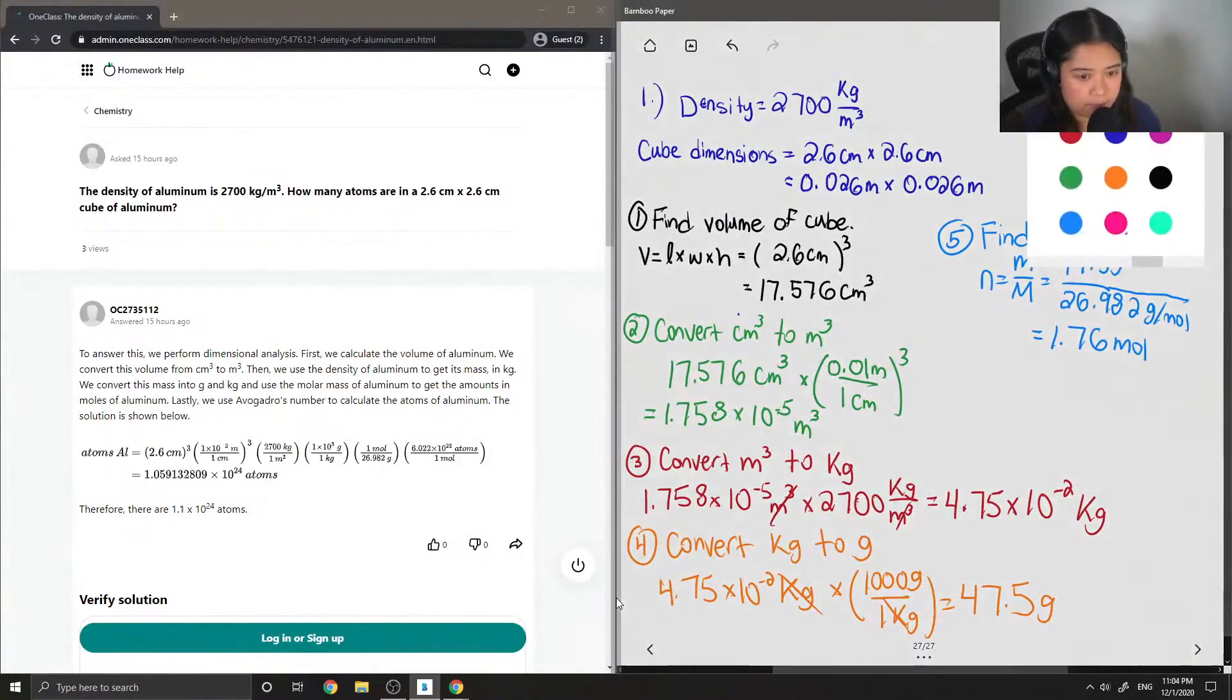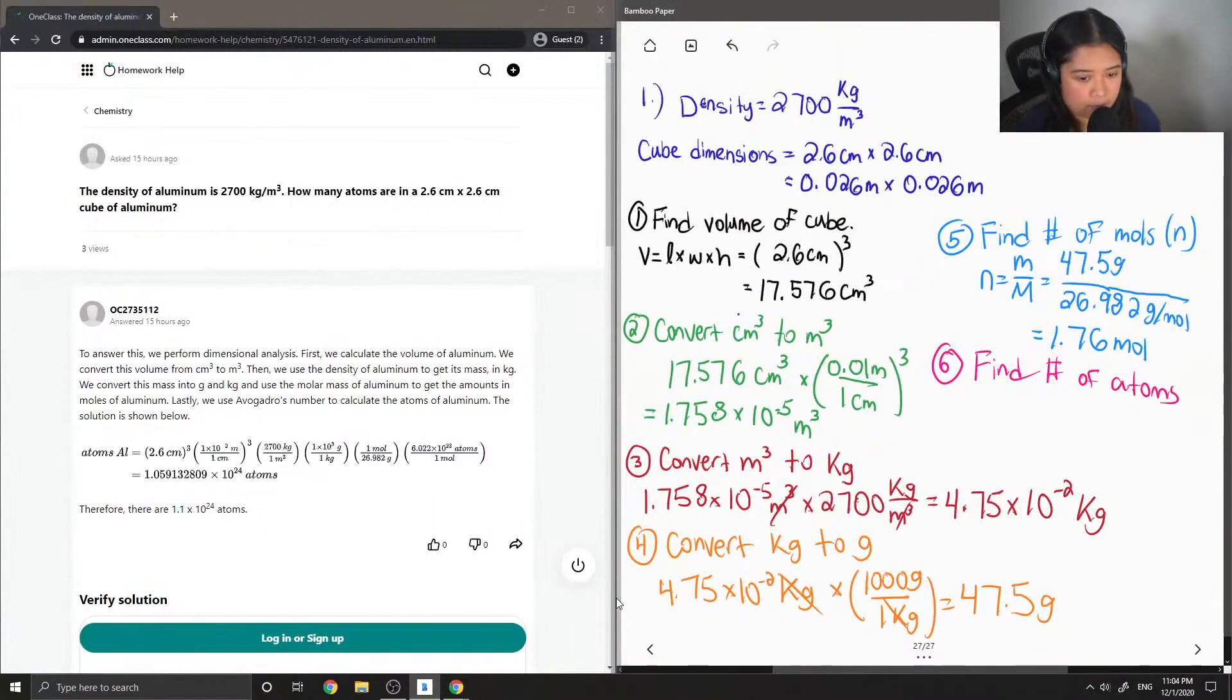And the last step is to find the number of atoms. To do this, we just need to multiply our moles by Avogadro's number, which is 6.022 times 10 to the 23. And its units are in atoms per mole. So our moles will cancel out and we're left with a value of 1.1 times 10 to the 24 atoms.